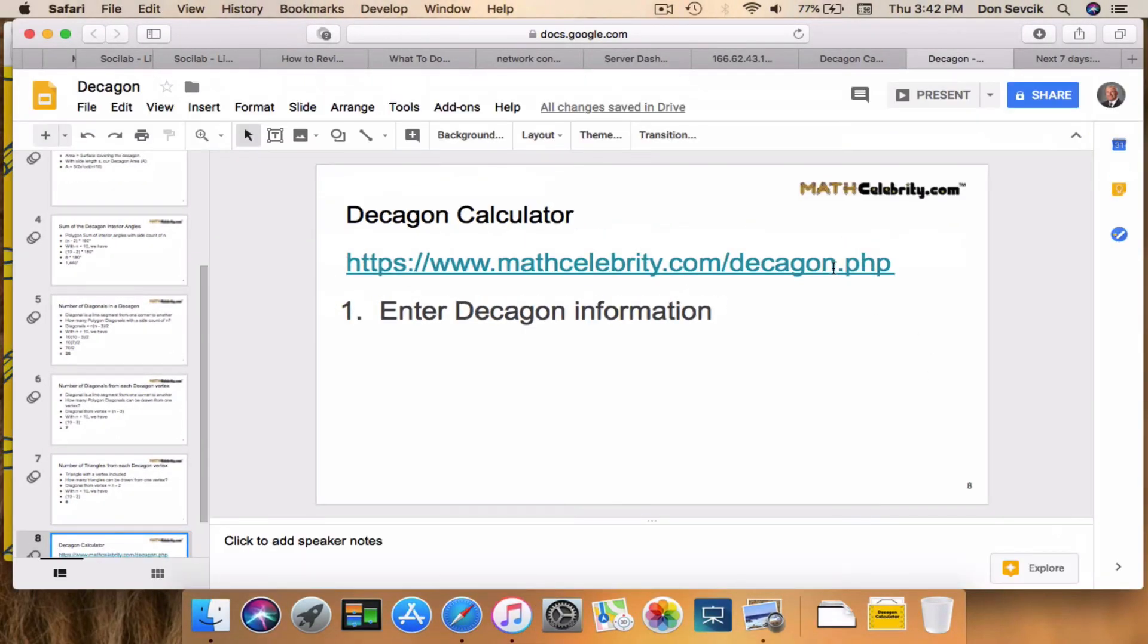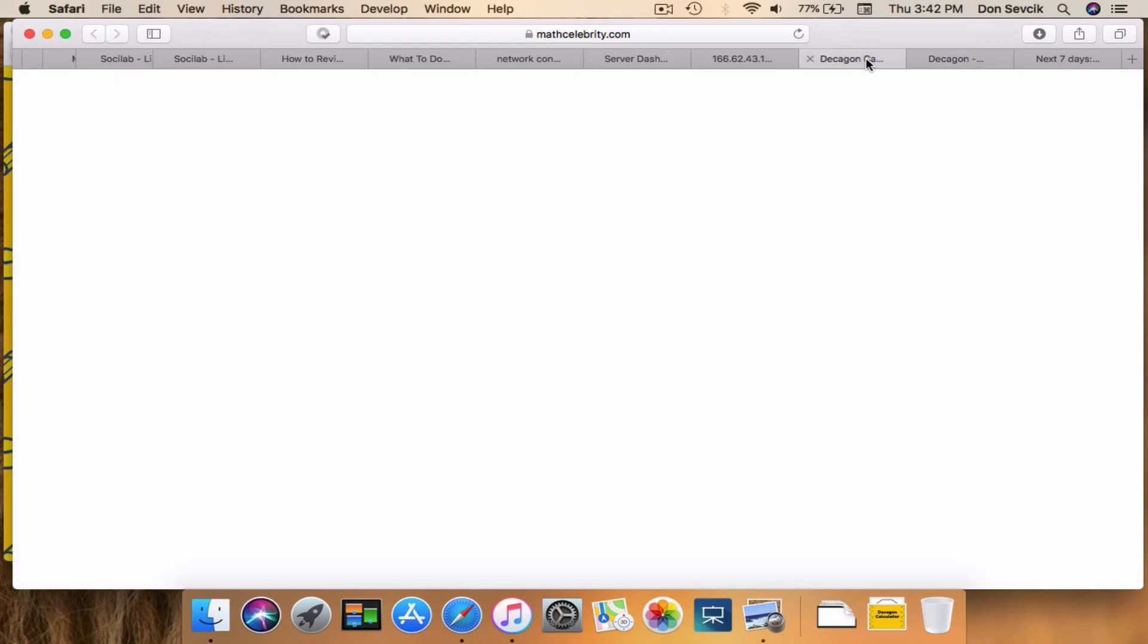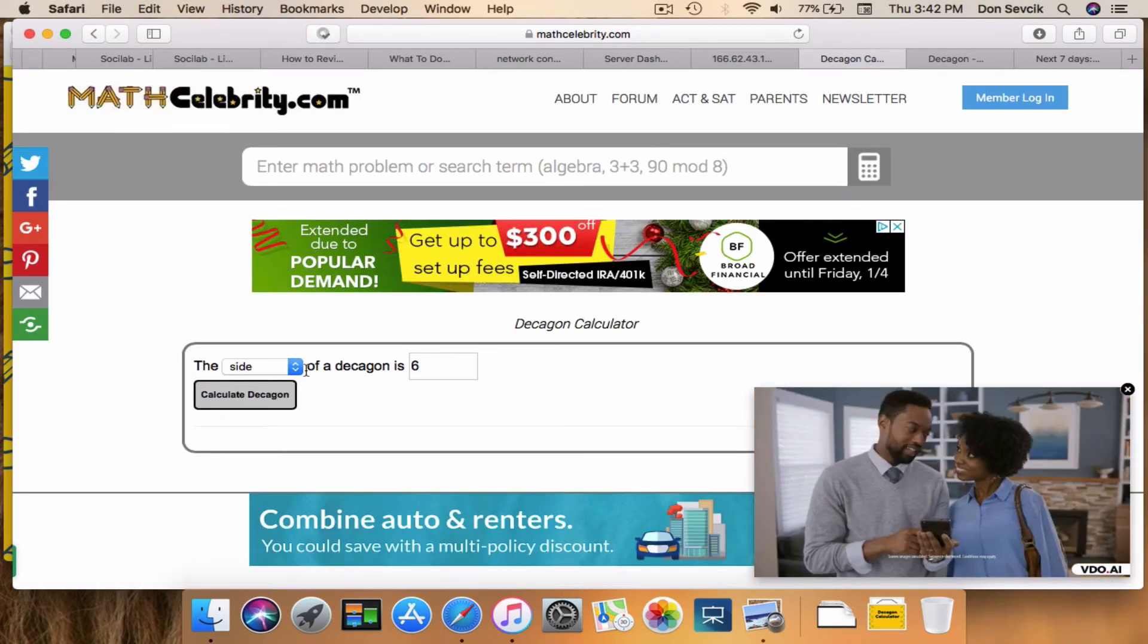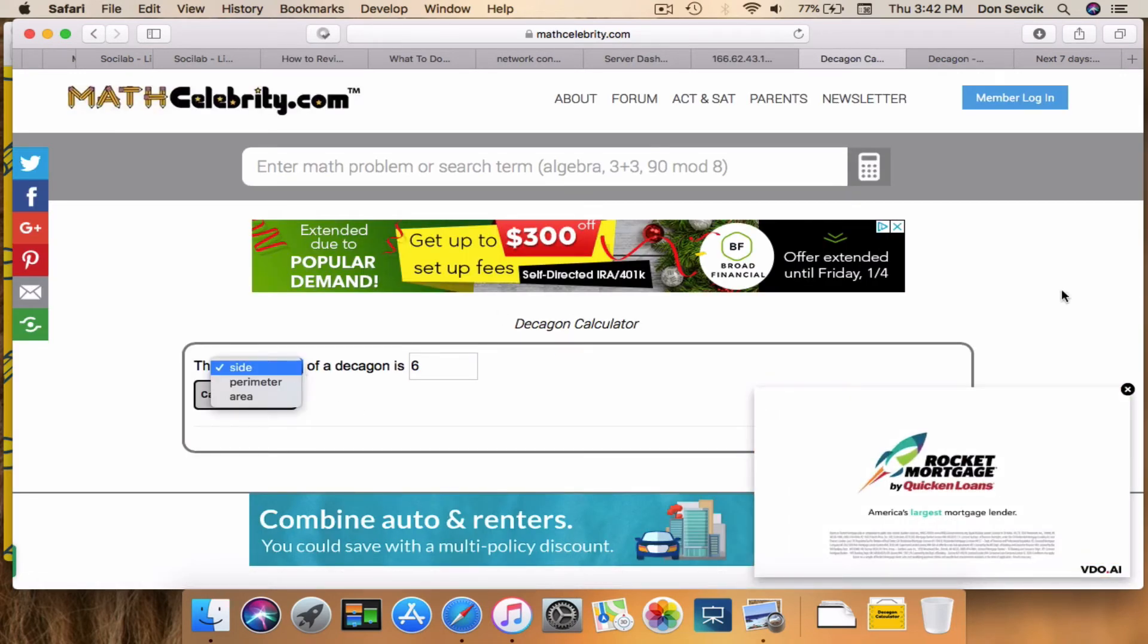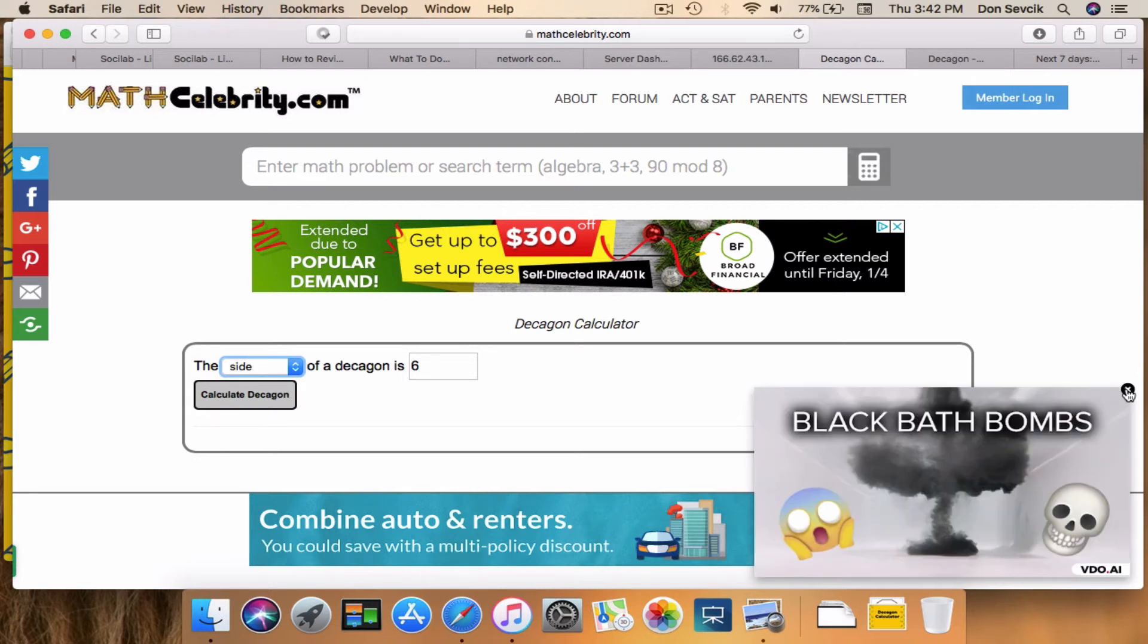So we're going to jump on over to this link. And you can pick various options from this drop-down. So we've got side, perimeter, and area.